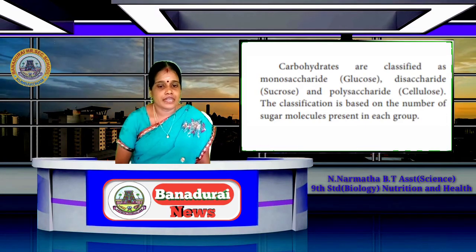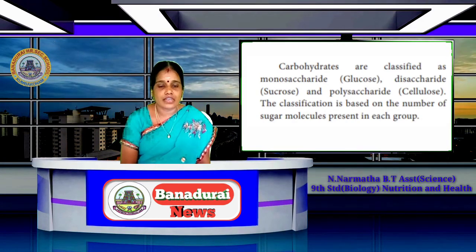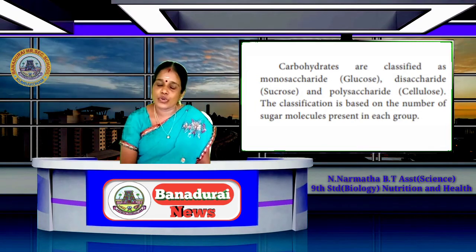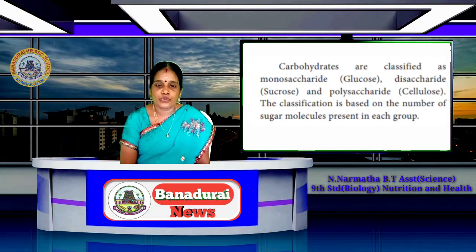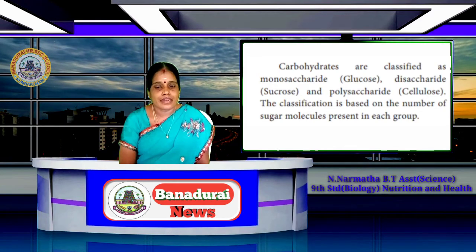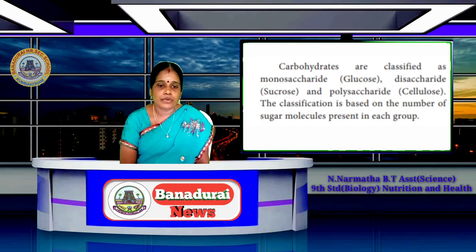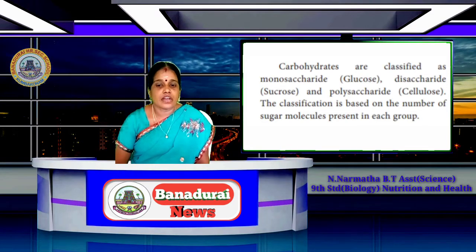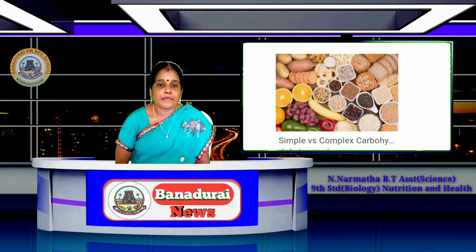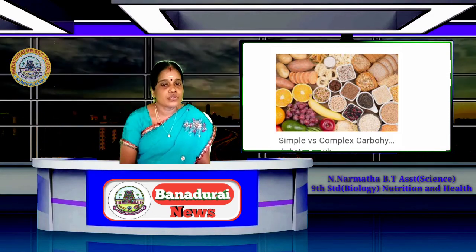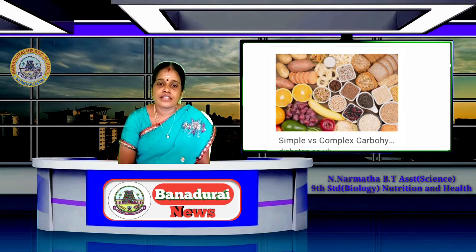Carbohydrates are classified into monosaccharides, disaccharides, and polysaccharides. Monosaccharides include glucose. Disaccharides include sucrose. Polysaccharides include cellulose. The classification is based on the number of sugar molecules present in each group.